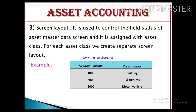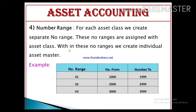Screen layout is a four-character code used to control the field status of asset master data. For example, for a building we may want to show the house number field, and for a motor vehicle we may want to show the vehicle plate number field. We can control which fields are optional, required, or hidden using this screen layout.